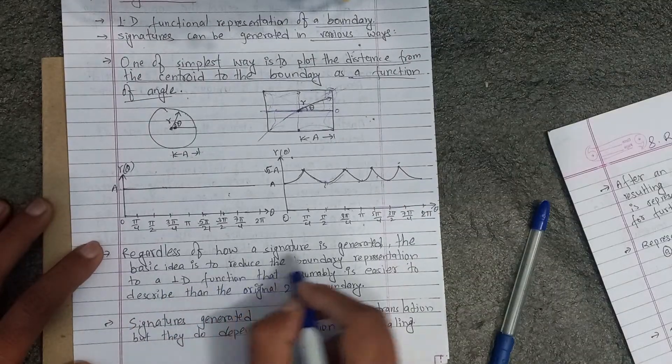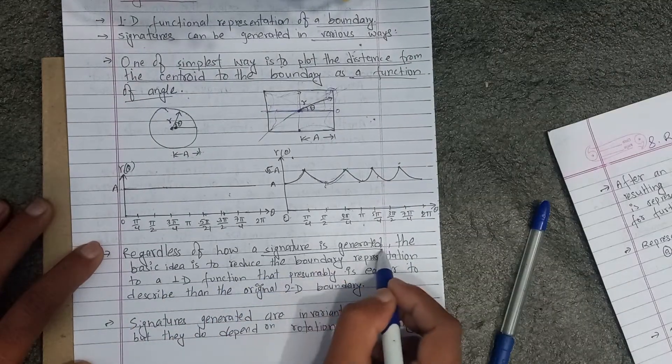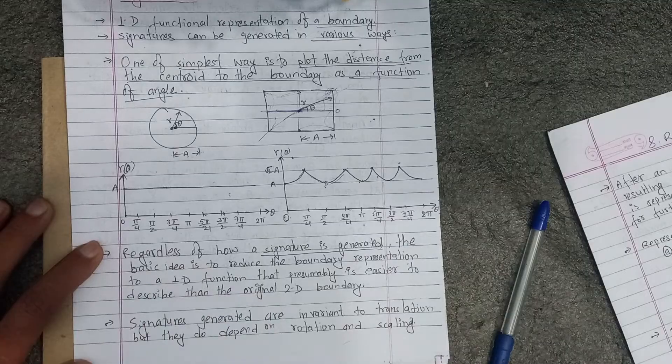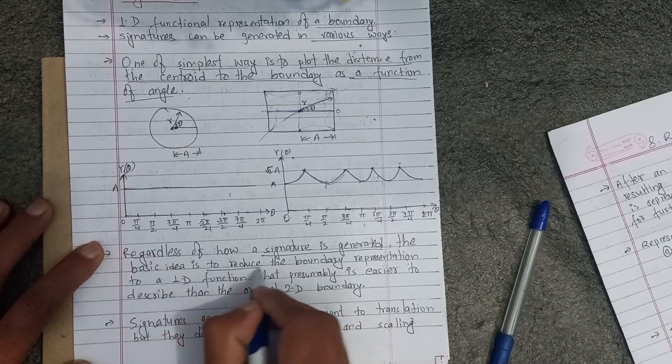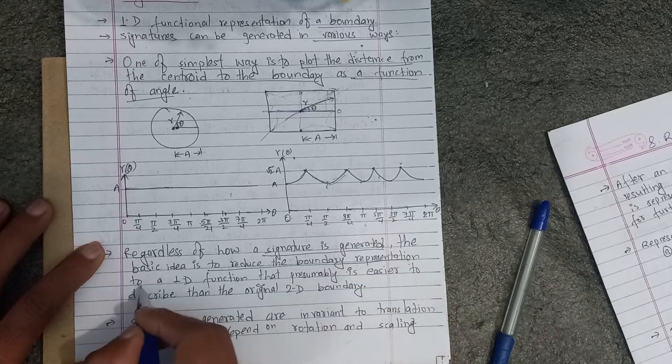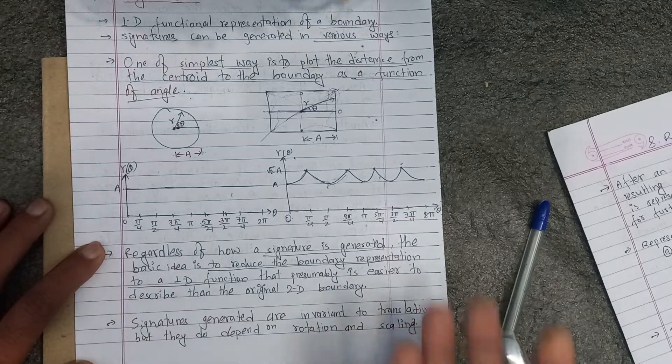Regardless of how a signature is generated, the basic idea is to reduce the boundary representation to a one-dimensional function.